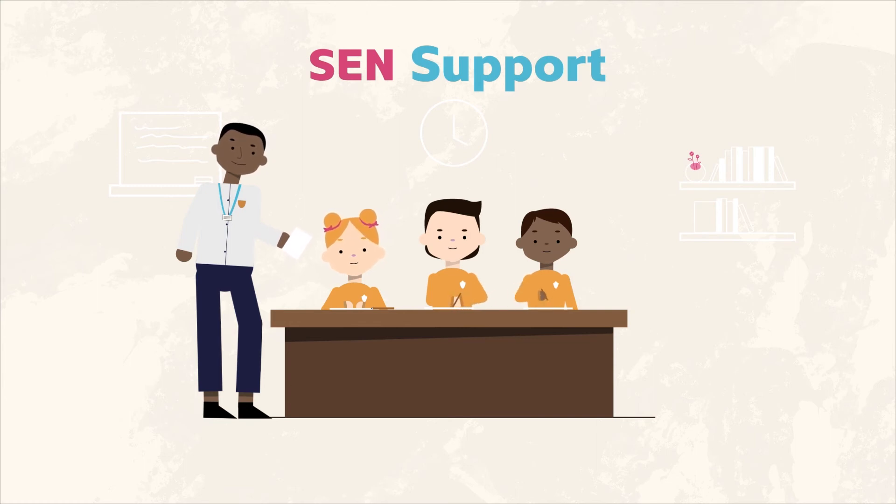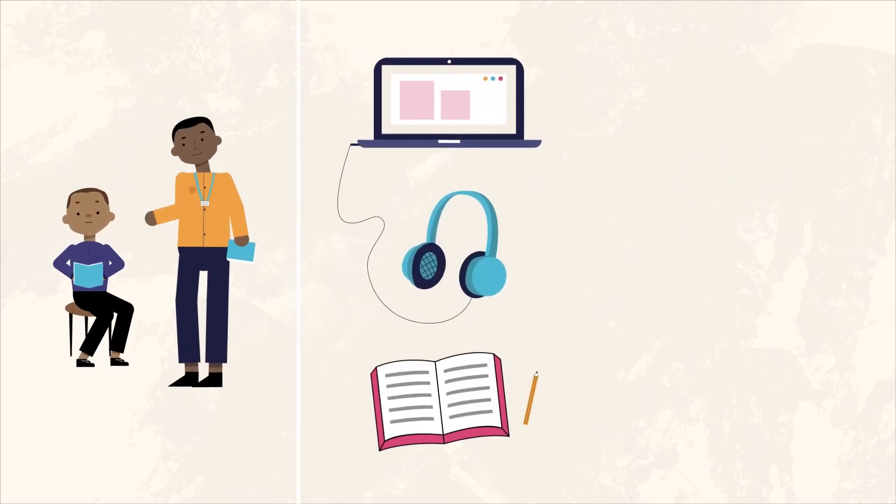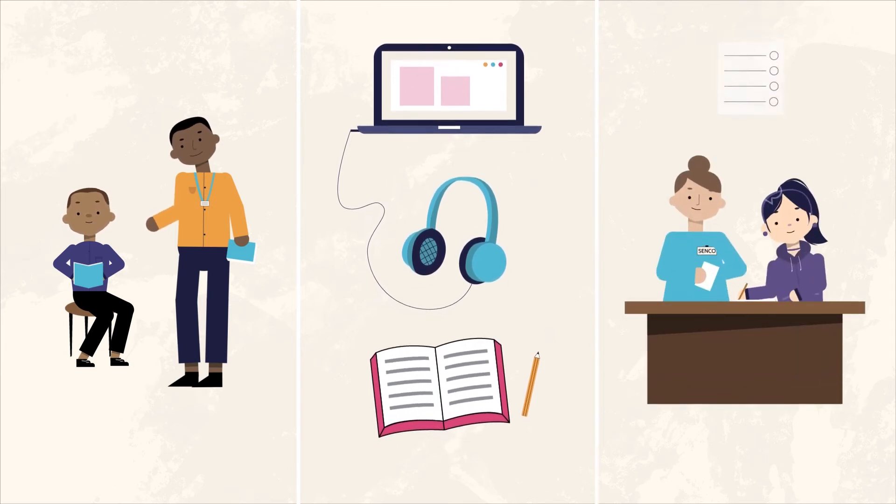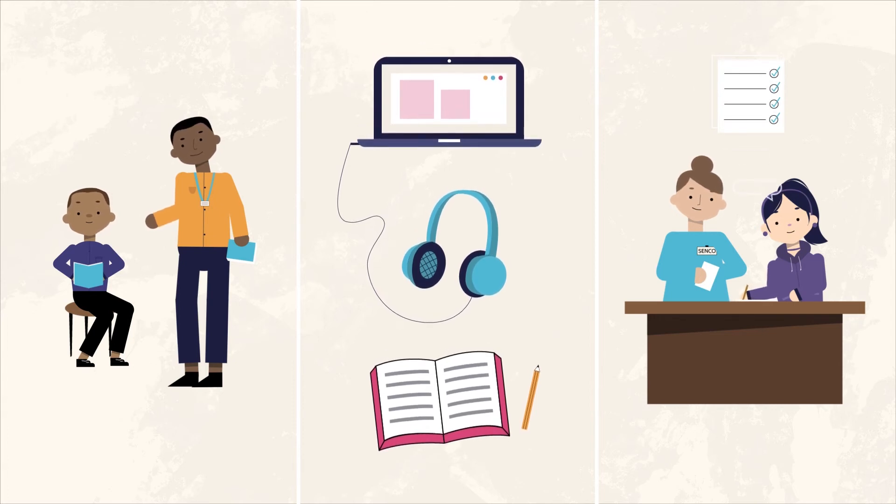Your child's teacher will work with you to develop a plan that identifies the support they need and how this will be provided. This could include things like extra help with reading and writing, adapted materials and equipment, specialist assessments. And when your child is older, they can also offer extra help with further education and applications.